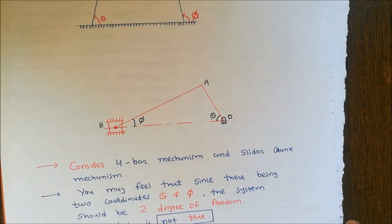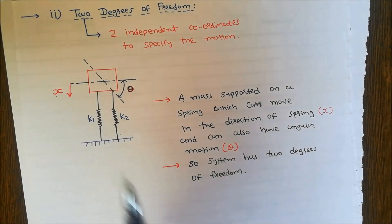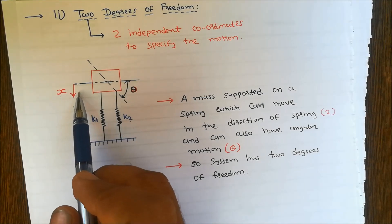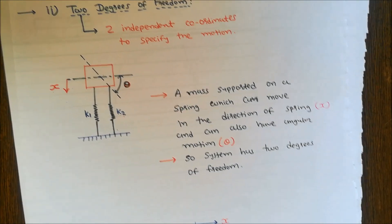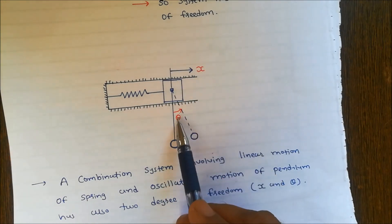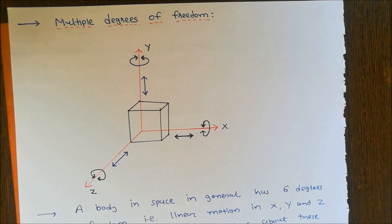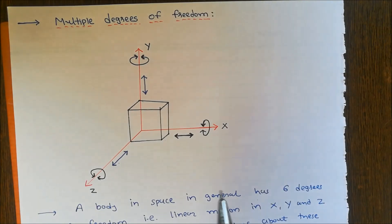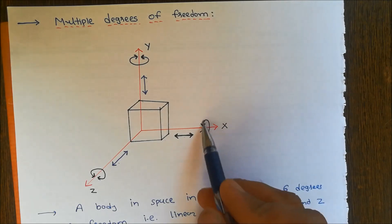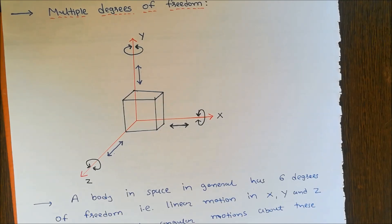Another example of one degree of freedom is the four-bar mechanism and slider-crank mechanism. For two degrees of freedom: a mass supported on two springs with different stiffnesses which can move in the direction of the spring and also have angular motion — two coordinates are required. Also, a combination system involving linear motion and angular motion requires two coordinates x and theta, giving two degrees of freedom. Finally, for multiple degrees of freedom, an object in space has six degrees of freedom: three linear motions in x, y, and z, and three angular motions about those axes. Thank you.